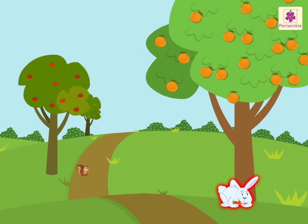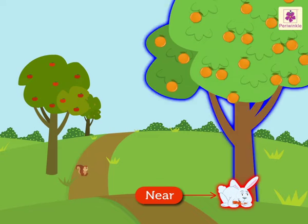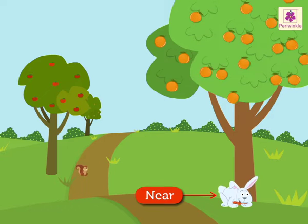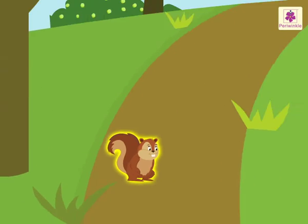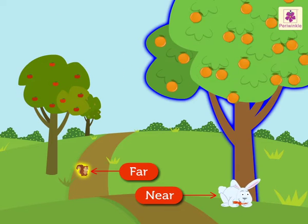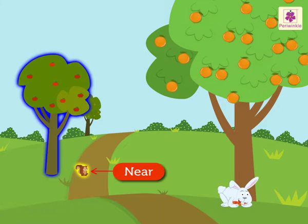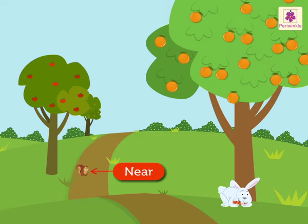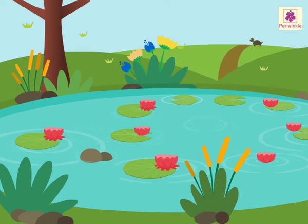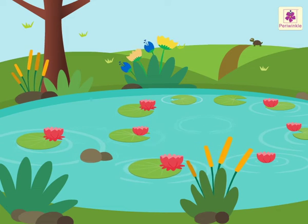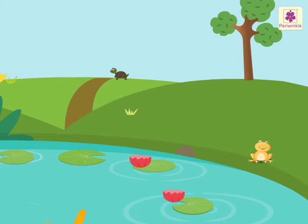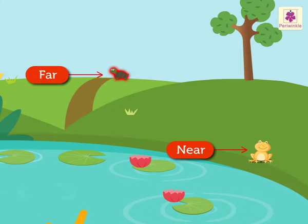A rabbit is sitting near the orange tree, but the squirrel is far from the orange tree. Similarly, the squirrel is near the apple tree, but the rabbit is far from the apple tree. Here is a beautiful pond. We can see a frog near the pond, but the tortoise is far from the pond.